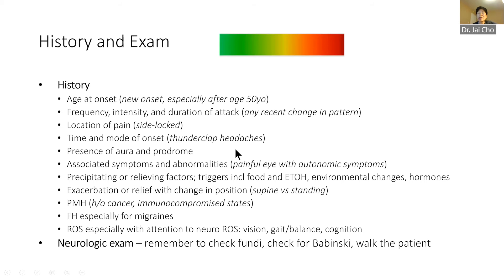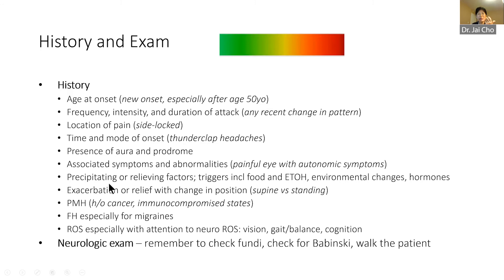Thunderclap headaches — headaches that go from zero to 100 miles per hour in one minute — are a major red flag. It's also nice to know whether the patient is having aura: flashing lights, zigzag lines, nausea, and being very sensitive to noise and smell in particular is highly pathognomonic, or very specific, for migraines. If headaches are focused around the eye, especially with tearing and redness, those are always really worrisome. Headaches that vary with the weather are much less concerning, because brain tumors or aneurysms wouldn't vary depending on weather.